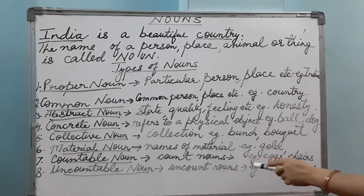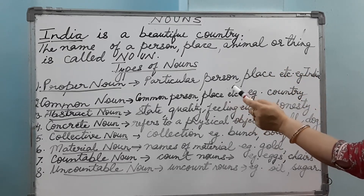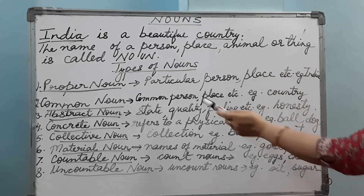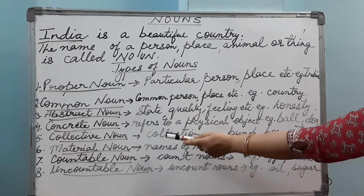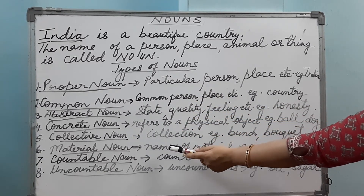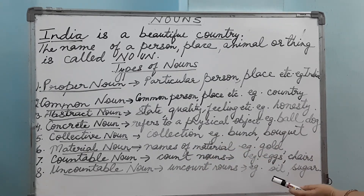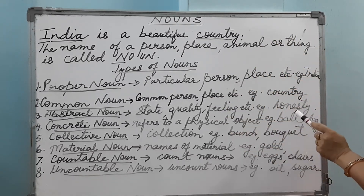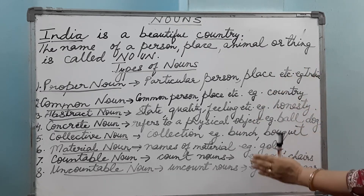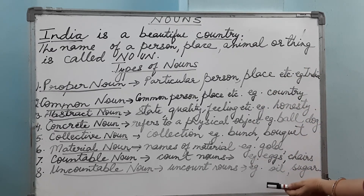So in this video we have understood the types of nouns and what a noun is. The nouns we discussed today are: proper noun, common noun, abstract noun, concrete noun, collective noun, material noun, countable noun, and uncountable noun. I hope you liked this video. I have explained everything in a brief way so that you can understand all the types of nouns. If you like it, please share and subscribe to my channel. Thank you.